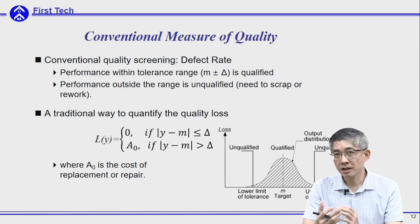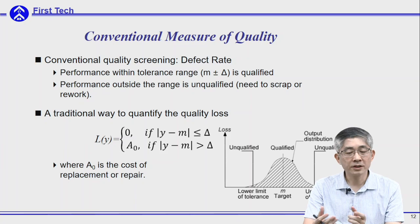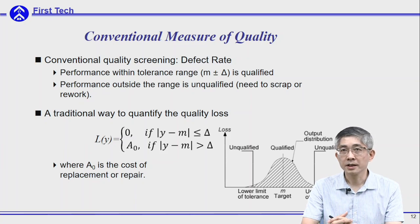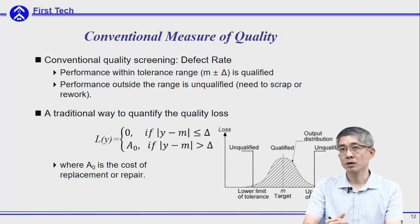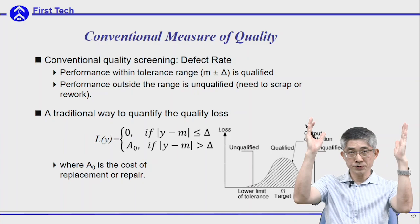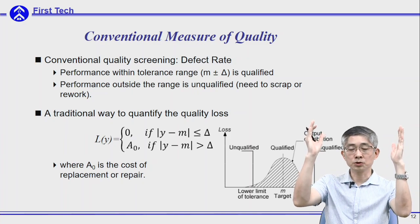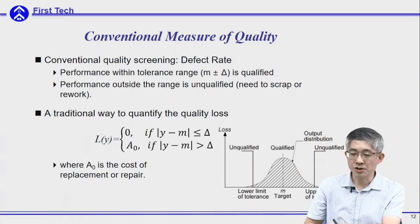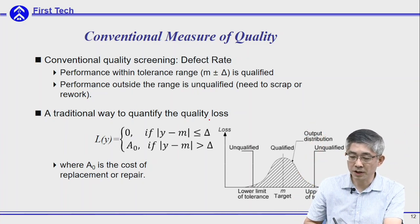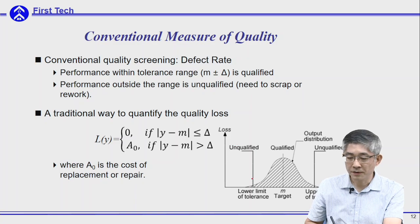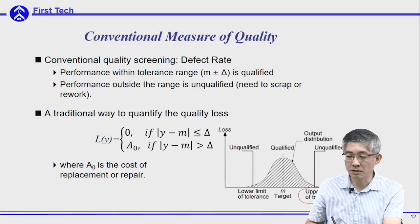Let's think of the conventional measure of quality. In the past we usually use the goalpost type of quality control, such as the figure over here. You have a tolerance limit — this is the upper limit of tolerance, and this is the lower limit of tolerance.